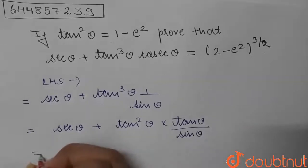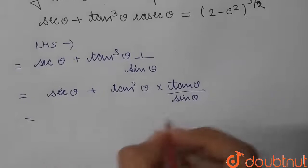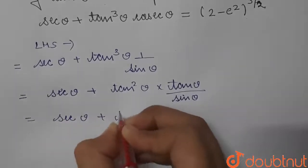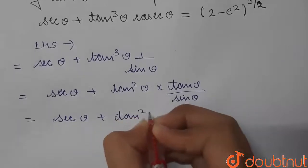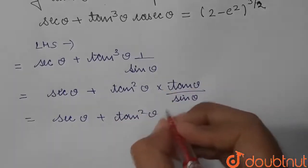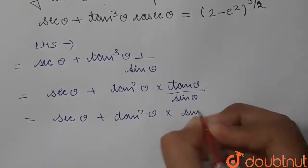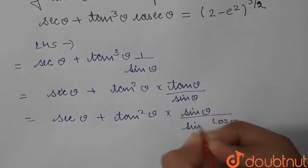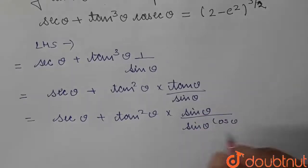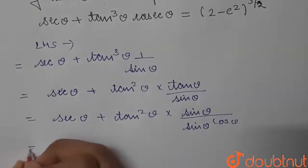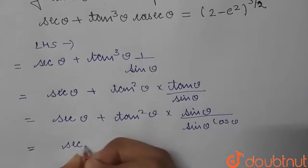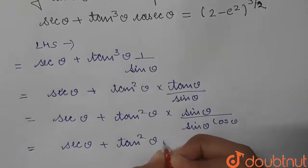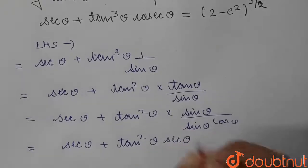Now we are getting sec theta plus tan squared theta. Again, tan theta can be further simplified as sine theta by cos theta, and here we are having this sine theta. They will get cancelled, and 1 by cos theta is nothing but sec theta. So we are getting sec theta plus tan squared theta into sec theta.